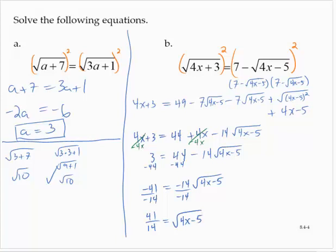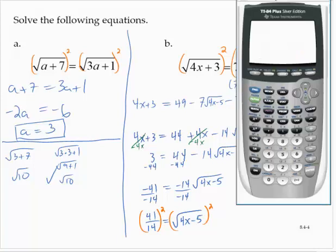All right, squaring both sides gives me 41 over 14 squared. We could go into our math menu and hit Enter and Enter again. It gives me the fraction 1681 over 196.